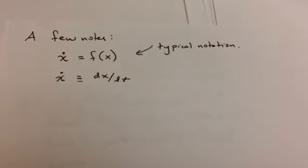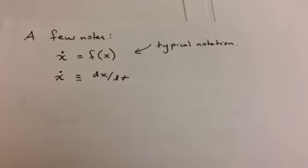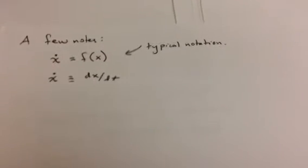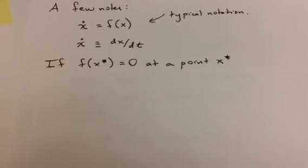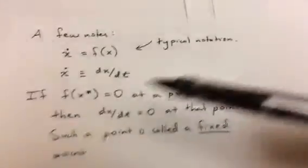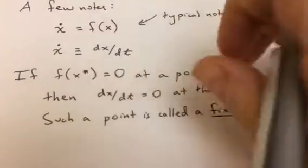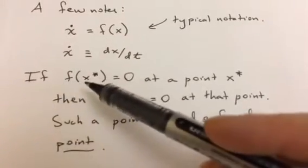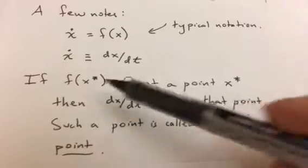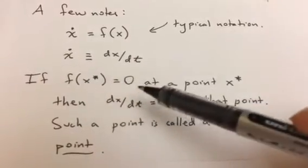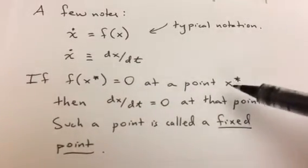Potentially, it could be y dot equals f of y, but that would be more unusual. Okay, so now a definition. Here's the definition. If there's a point x star, if f of x star is equal to 0 at some point x star,